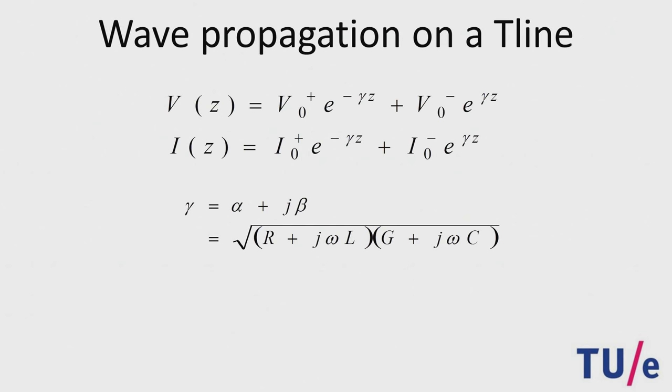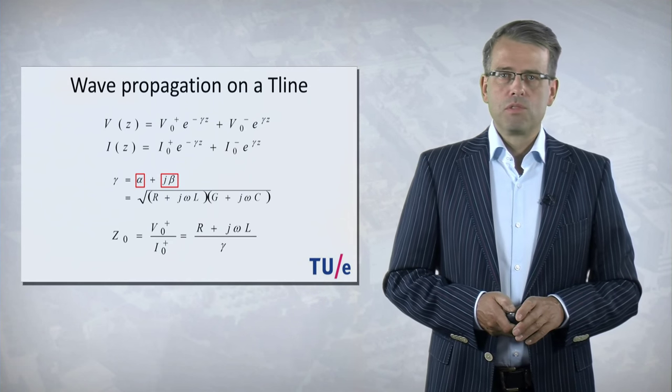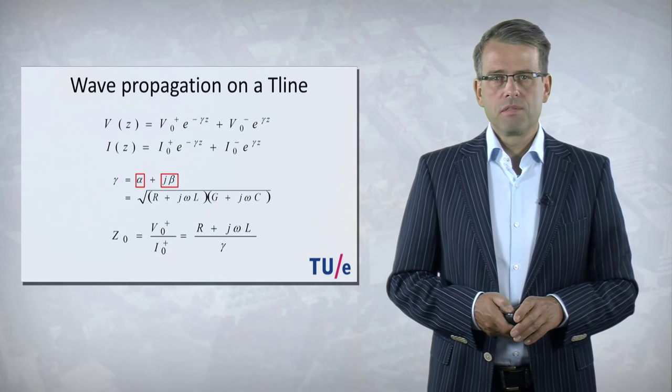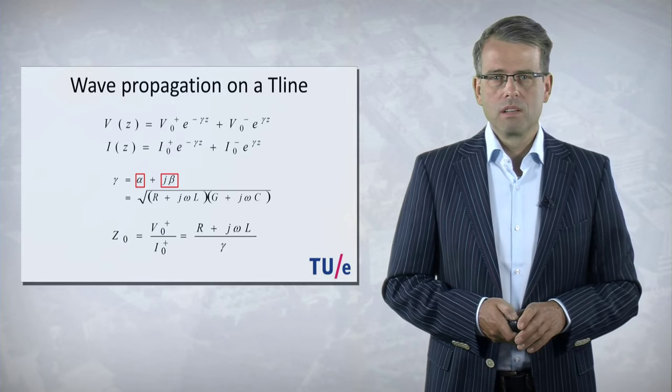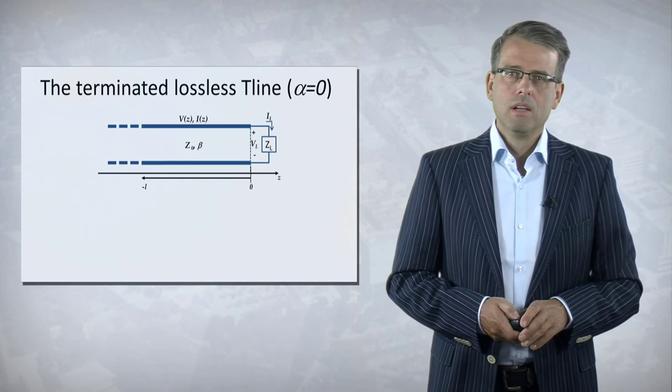The parameters in this equation, gamma, can be written in a real part, which is the attenuation constant alpha, and an imaginary part, beta, which is the phase constant. The amplitudes of the voltage and the current waves, V plus divided by I plus, is known as the characteristic impedance, Z_0, and can also be related to the components of the equivalent circuits that we introduced before.